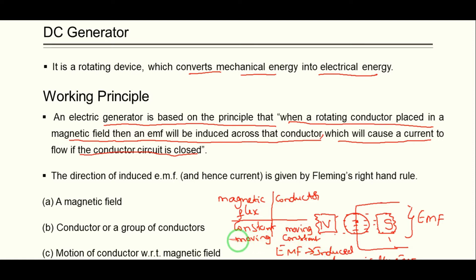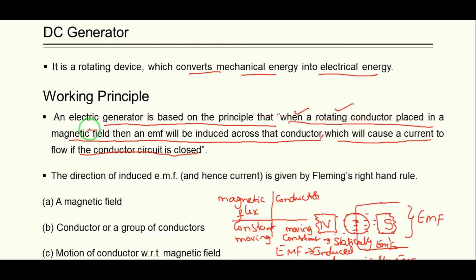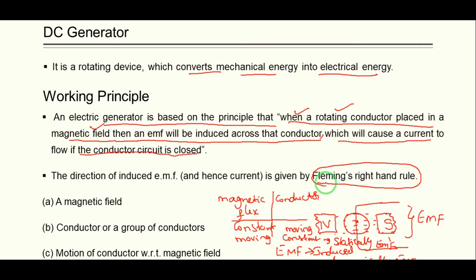If the flux is moving and the conductor is constant, that is statically induced EMF. Coming back to the generator principle: when a rotating conductor is placed in a magnetic field, an EMF is induced, and the direction of the induced EMF or current direction is determined by Fleming's right-hand rule. For a generator, we use Fleming's right-hand rule.